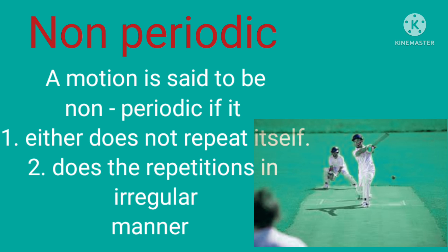Non-periodic motion is said to be non-periodic if it either does not repeat itself, or the repetition occurs in an irregular manner. For example, when a batsman hits a ball, it is irregular.